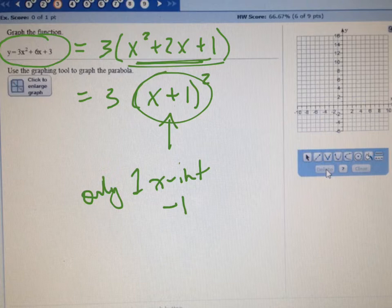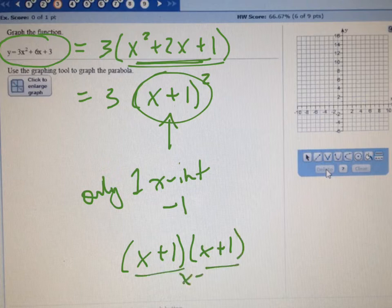Because if you solve this, what x plus 1 squared basically means you've got x plus 1 times x plus 1, which means these both give you x equals negative 1 when you set them equal to 0.